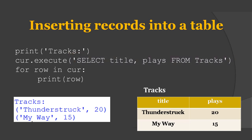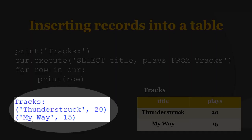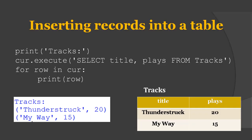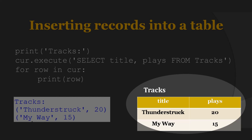After the SELECT command we use a for loop to display all the records. When you execute this program in your Python shell, you see that the for loop finds two rows and each row is a Python tuple with the first value as the title and the second value as the place number. So we have a table named tracks with two columns — title and place — and there are two rows of data.